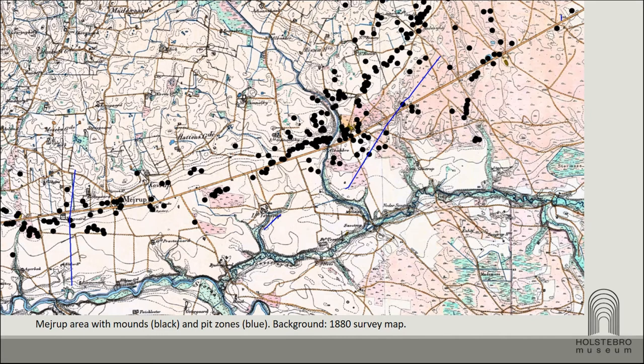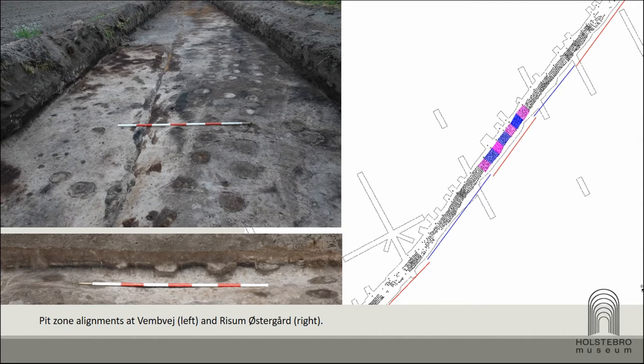During the early Iron Age, four pit zone alignments were constructed — two in my area and two in the neighboring parish. The pit zone alignments consist of several hundred small shallow pits dug in rows and stretching more than two kilometers across the landscape. Some of them are divided into sections and some have rows of post holes along one side. When the pit zone alignments were first discovered, they were compared to chevaux de frise or to Caesar's lilies, but the pit zone alignments in the Myrob area contain no evidence of spikes or other objects being placed in or between the pits.